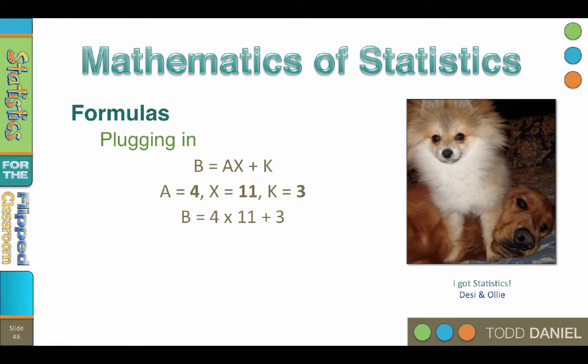You would work from left to right, doing multiplication and division first, then addition and subtraction. 4 times 11 is 44, plus 3 is 47. So b equals 47.